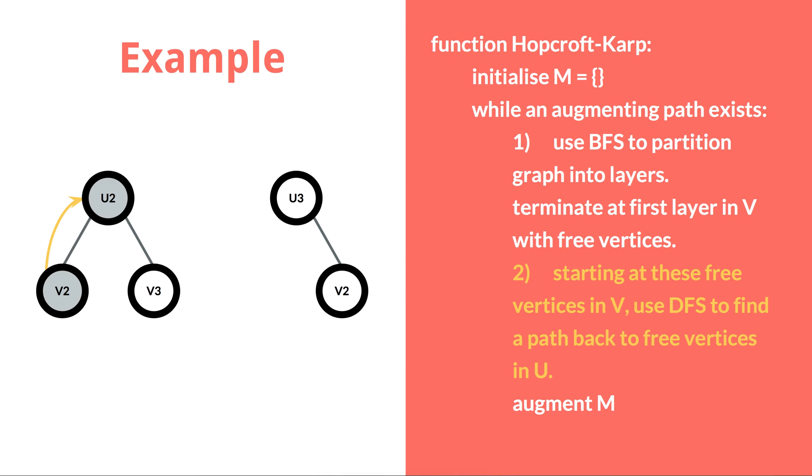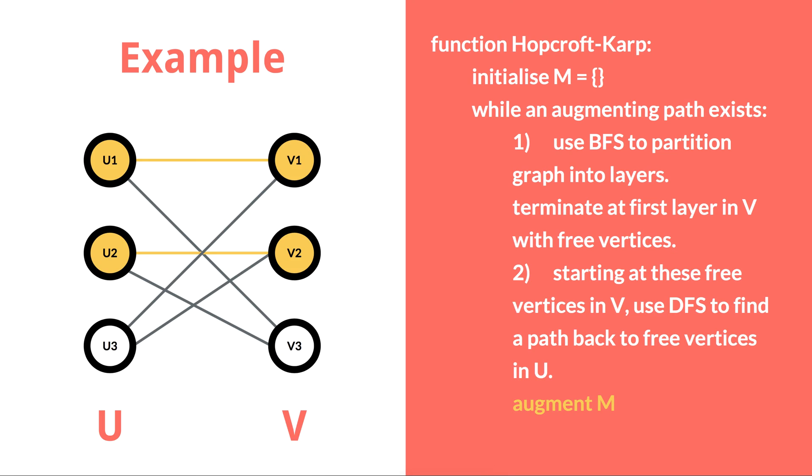The same process is followed for V2, with a path found to U2, which orphans U3, and the iteration ends. At this point, this is the semi-matched graph.